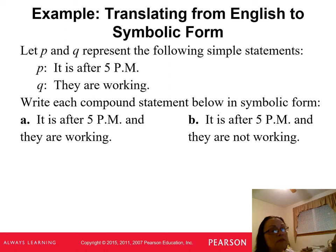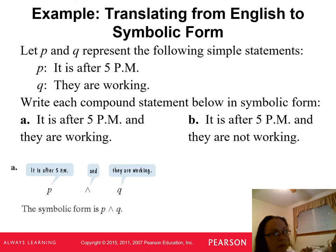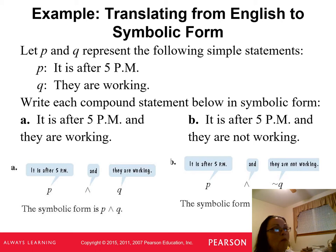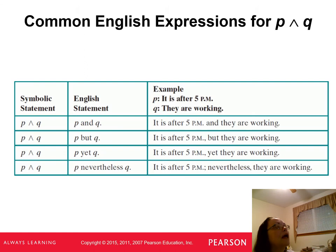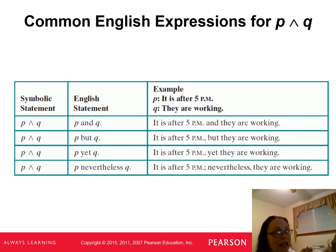We're going to translate statements from English to symbolic. If statement P is 'it's after 5 p.m.' and statement Q is 'they are working,' then 'it's after 5 p.m. and they are working' would be P ∧ Q. Remember we use the tilde symbol in front of Q to mean 'not.' The conjunctive 'and' can also appear as the words 'but,' 'yet,' and 'nevertheless.' So 'it is after 5 p.m. and nevertheless they are working' is the same as P ∧ Q. Think about that as you're doing your homework for section 3.2.